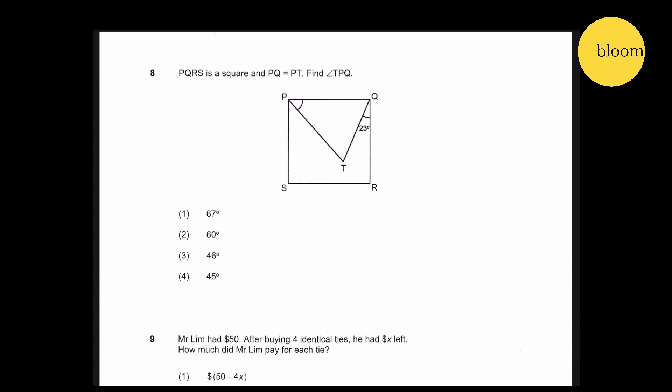Question 8: BQRS is a square, so all sides are the same length. BQ equals BT, so the triangle inside is an isosceles triangle. We want to find angle DPQ — that is, this angle here. We know that for a square, this angle is 90 degrees.